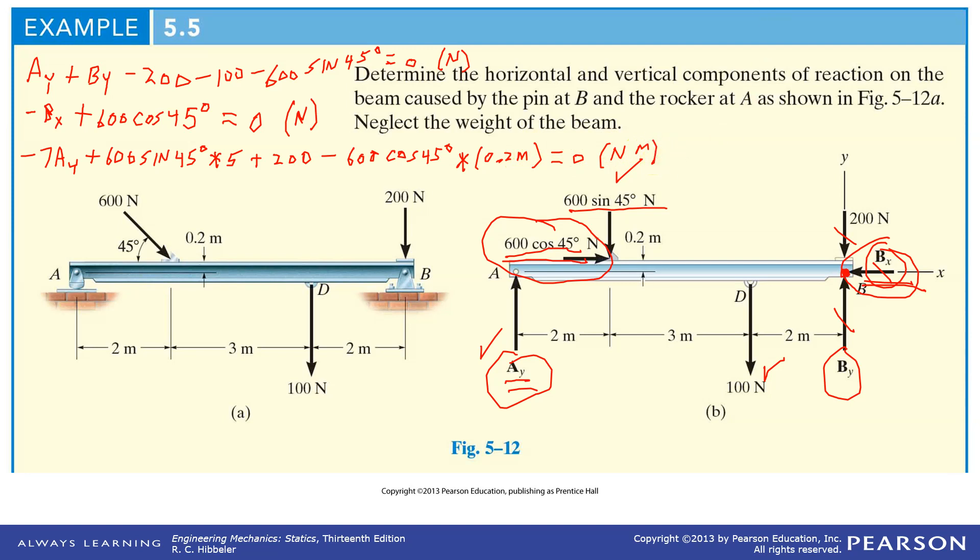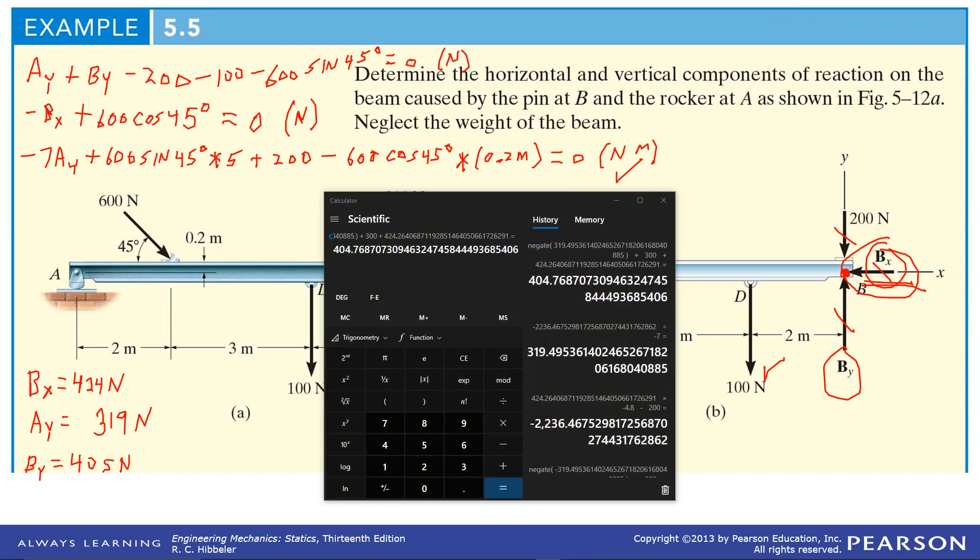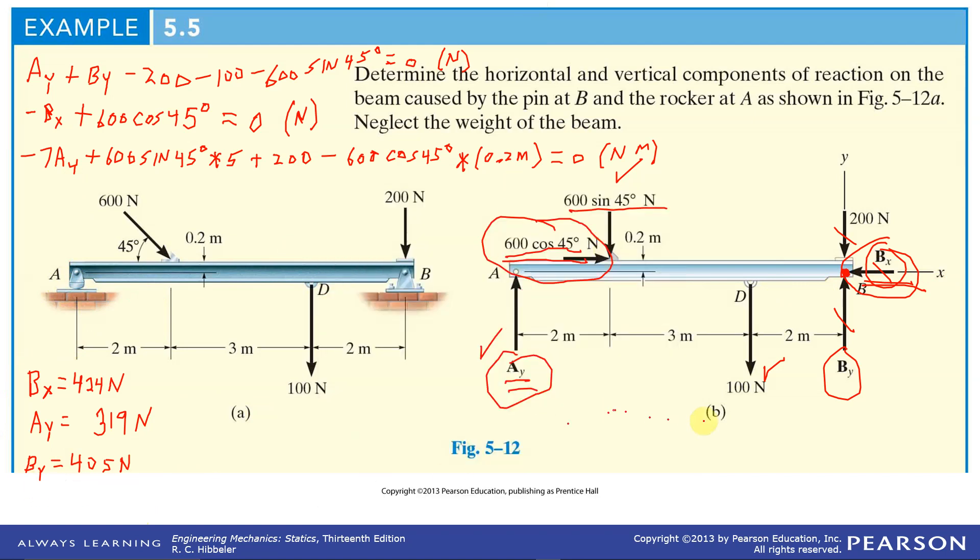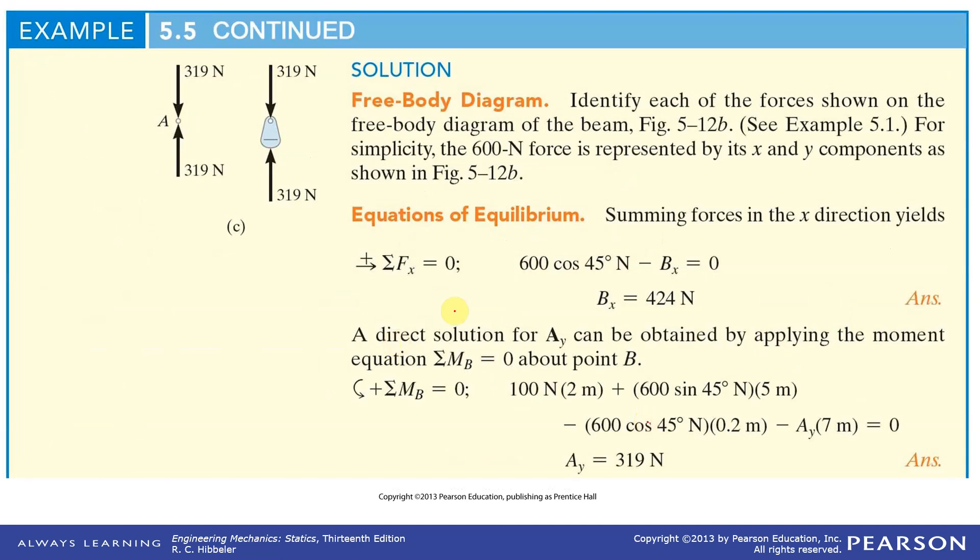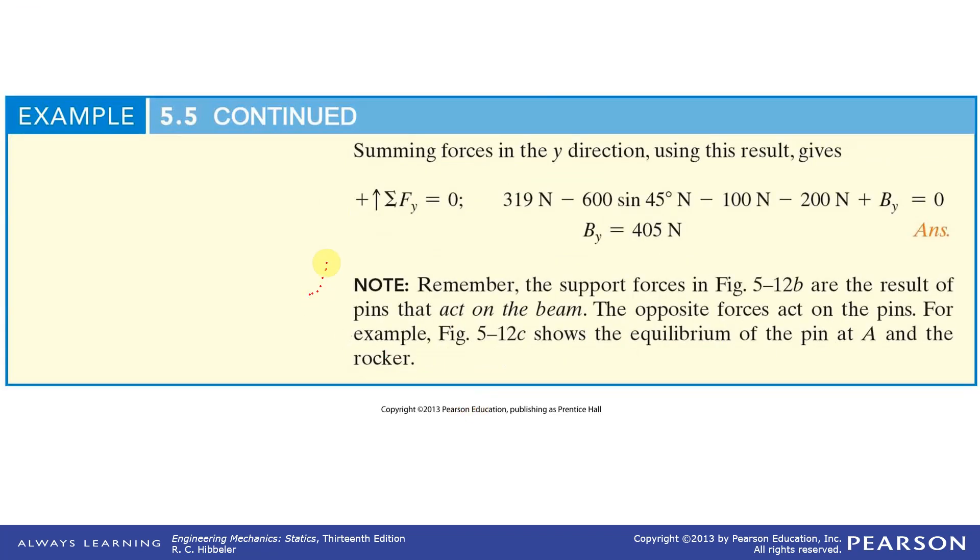Okay, so let's do the calculations. Here's calculations: Bx 424, Ay 319, and let me close my calculator out, 319, By 405. So they do all the calculations, same equations we got: Bx 424, Ay 319. Moment about B, remember we said we were going to do that, it was more convenient, and then calculate what By has to be, 405, which is exactly what we got.